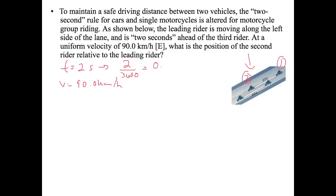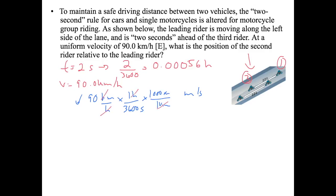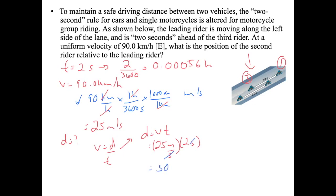Let's convert 90 kilometers per hour to meters per second: one hour over 3600 seconds, one kilometer over 1000 meters — so 90 times 1000 divided by 3600 gives 25 meters per second. Now using d equals v times t: 25 meters per second times 2 seconds. Seconds cancel and we get 50 meters. Since the riders are going east, the third rider is 50 meters west of the first rider.